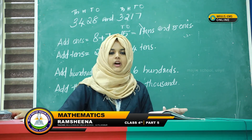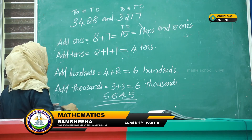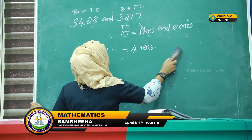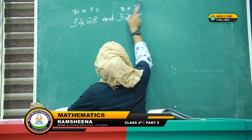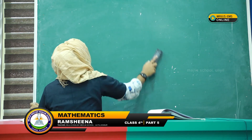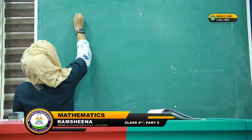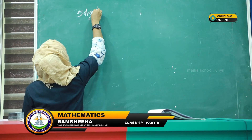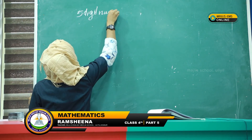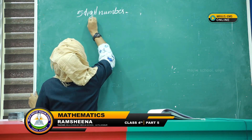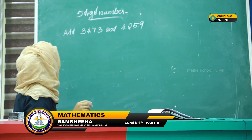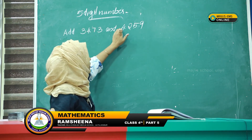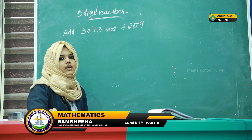Next we add addition of 5-digit numbers. Listen carefully. The numbers are 43473 and 34259.